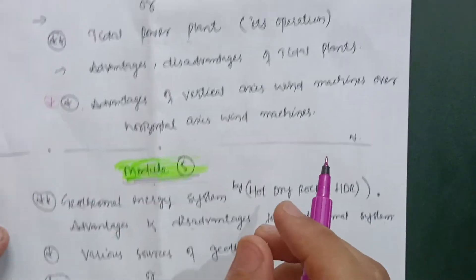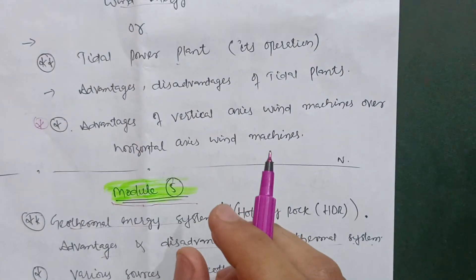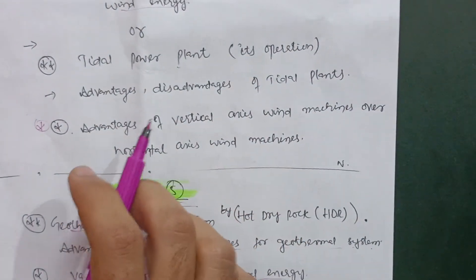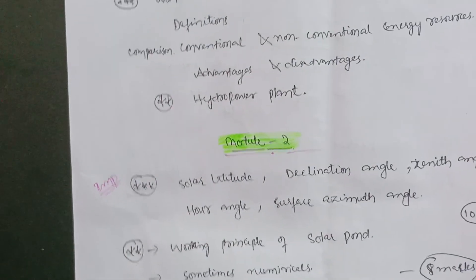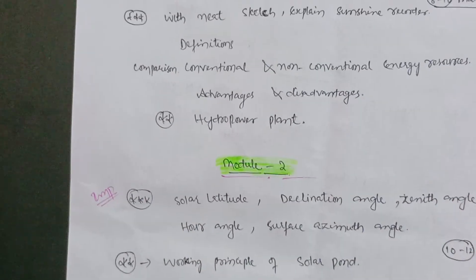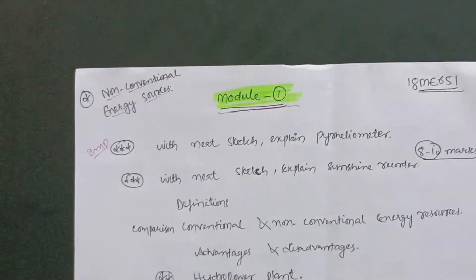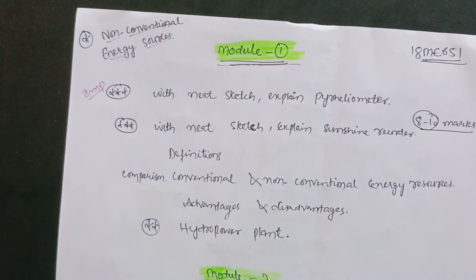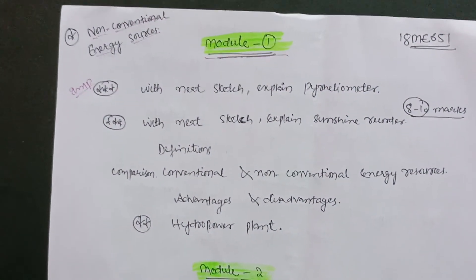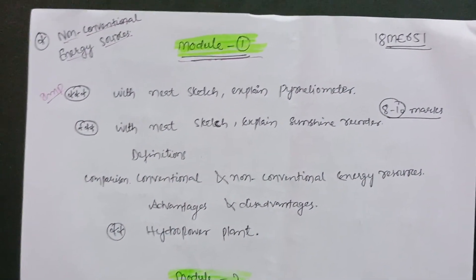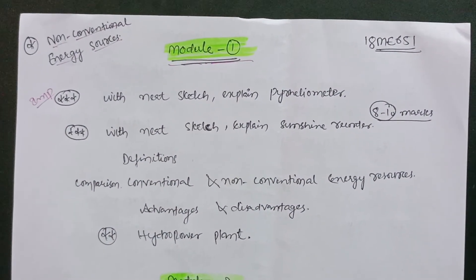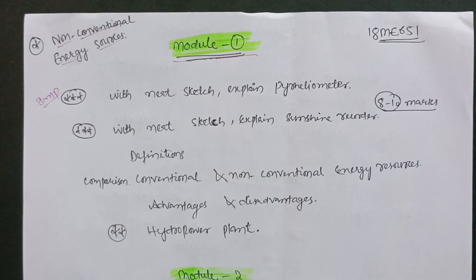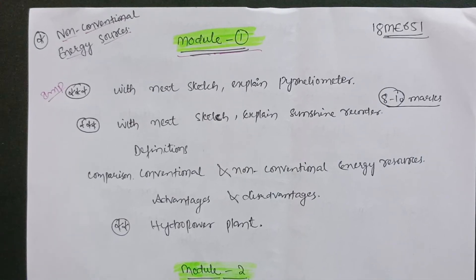So this was the content for this subject — Non-Conventional Energy Sources, a mechanical subject, code 18ME651. Go through this much content so that you can easily conquer this subject. Thank you for watching this video, my dear friends.